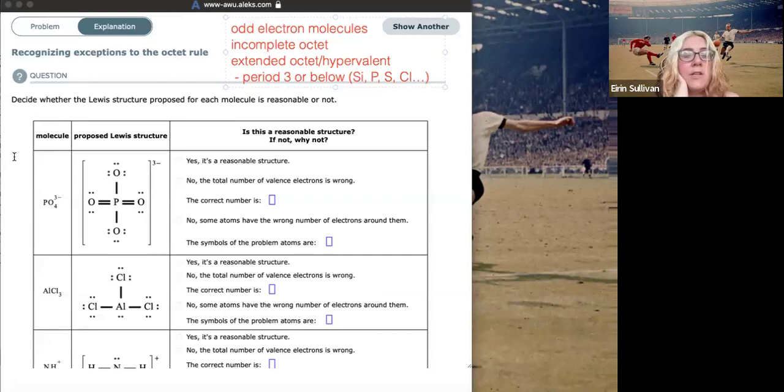First thing you ought to do for all of these structures is add up how many valence electrons you have, of course. So phosphorus is in group 15, so there's five valence electrons. Oxygen, of which there is four of them, is in group 16 with six valence electrons, and there's a plus three charge. So we're going to have to add three electrons to the total. So 6, 12, 24, plus 8 is 32 valence electrons.